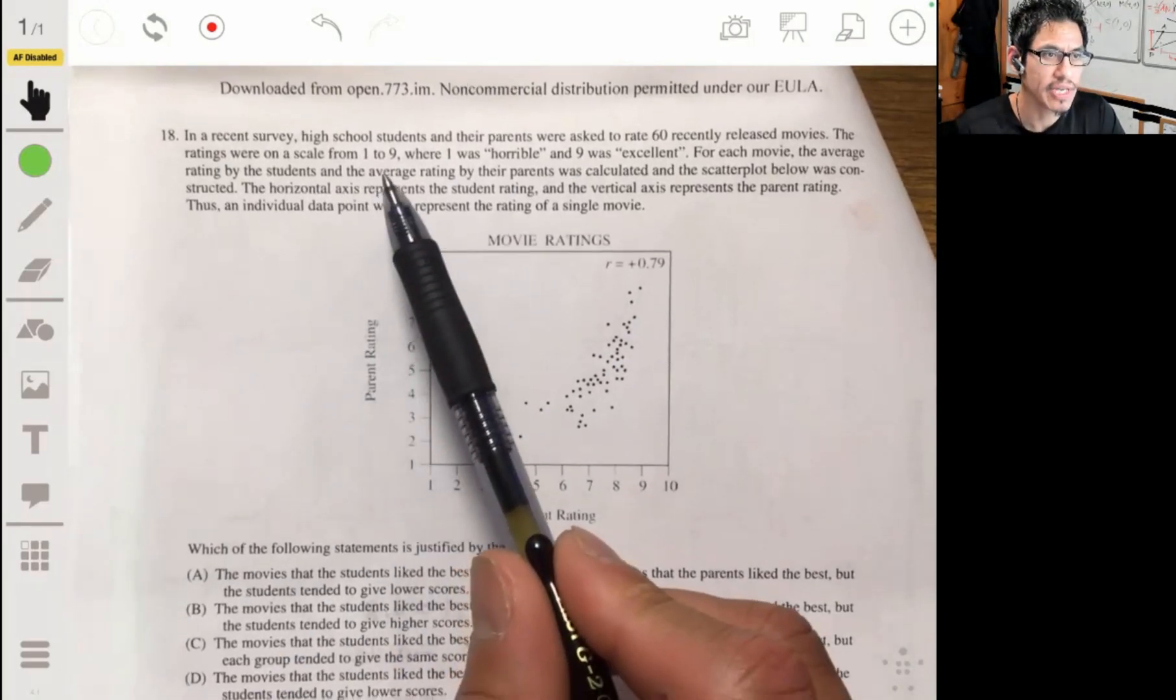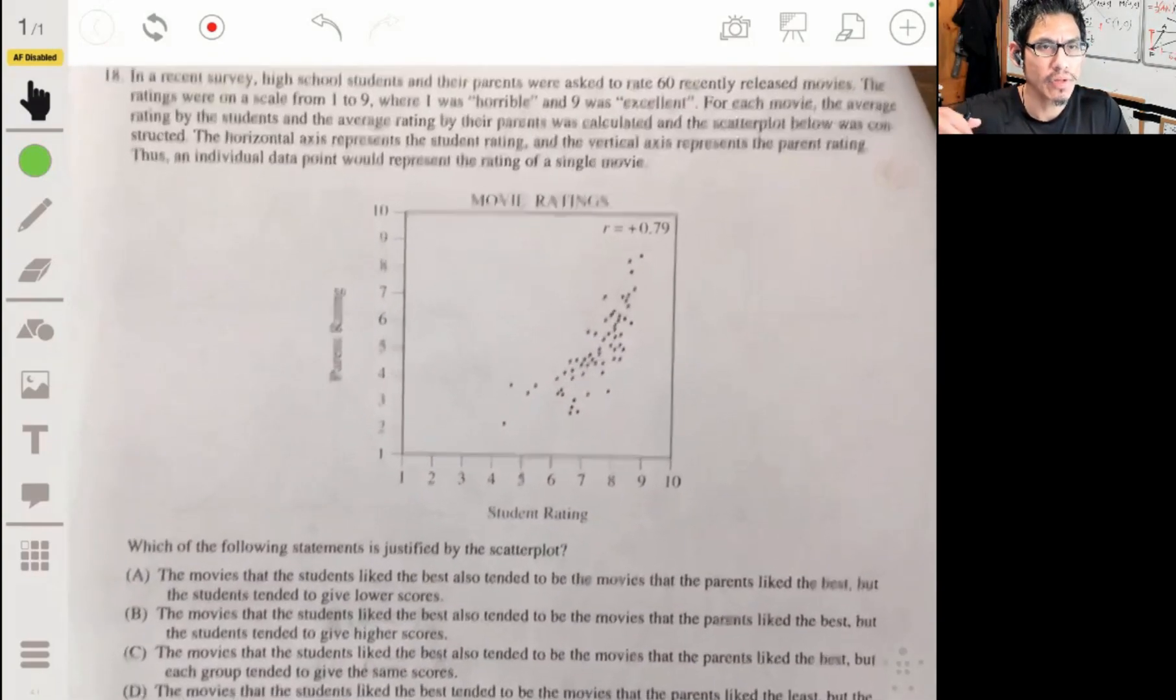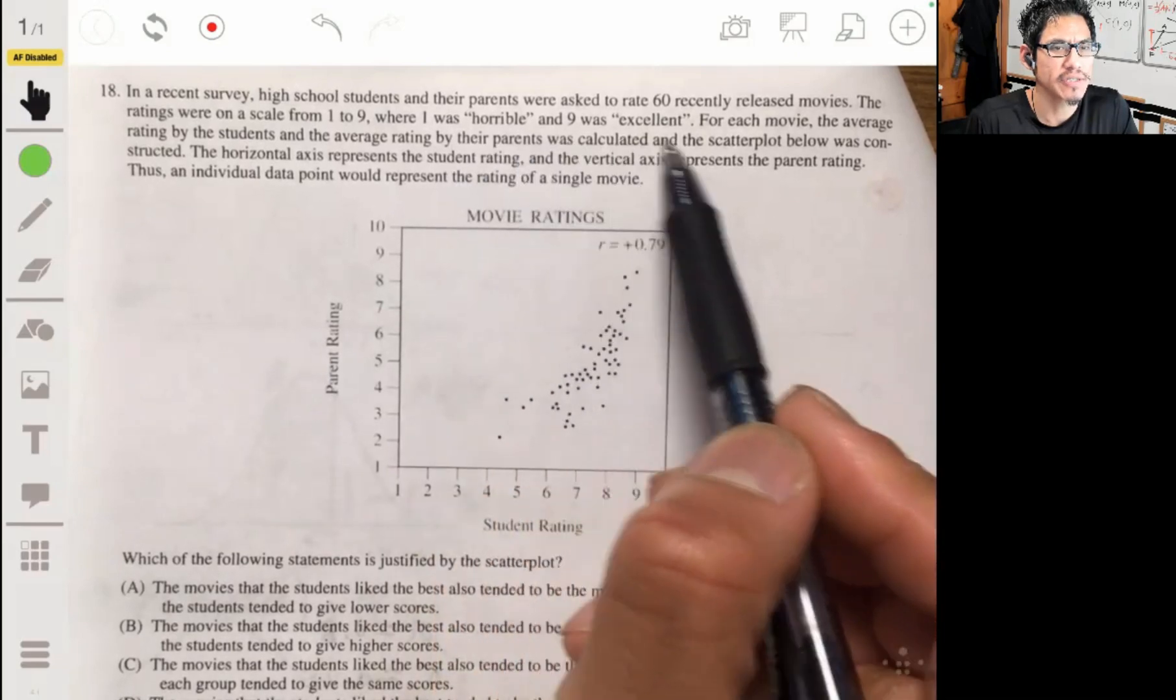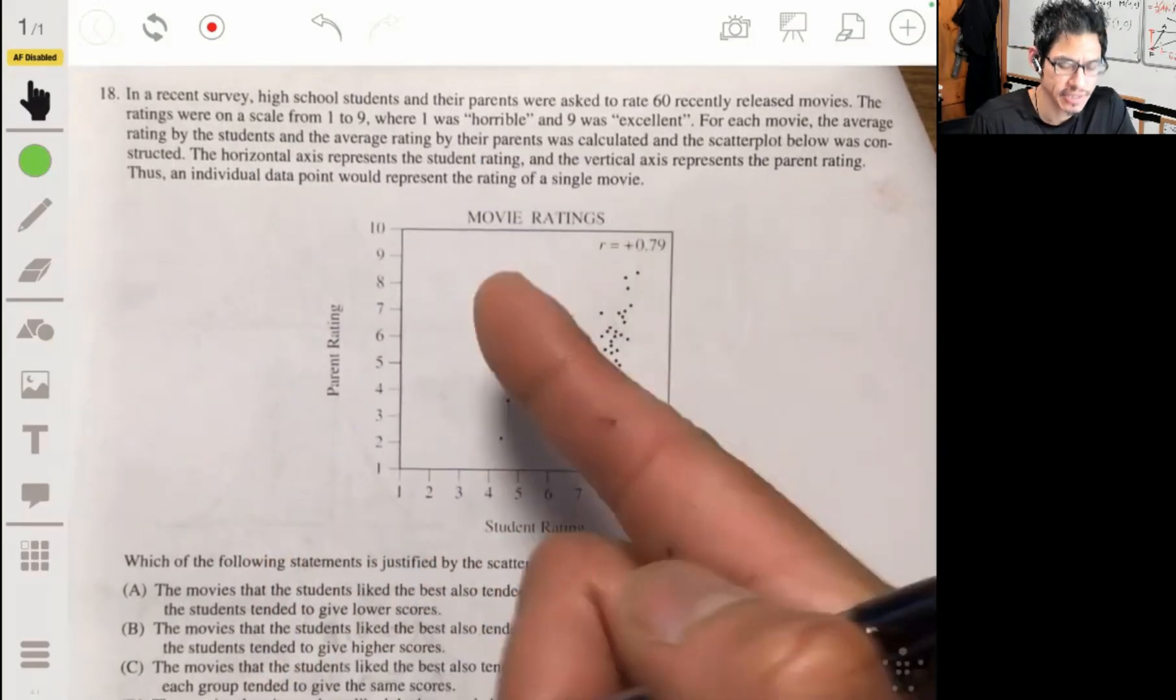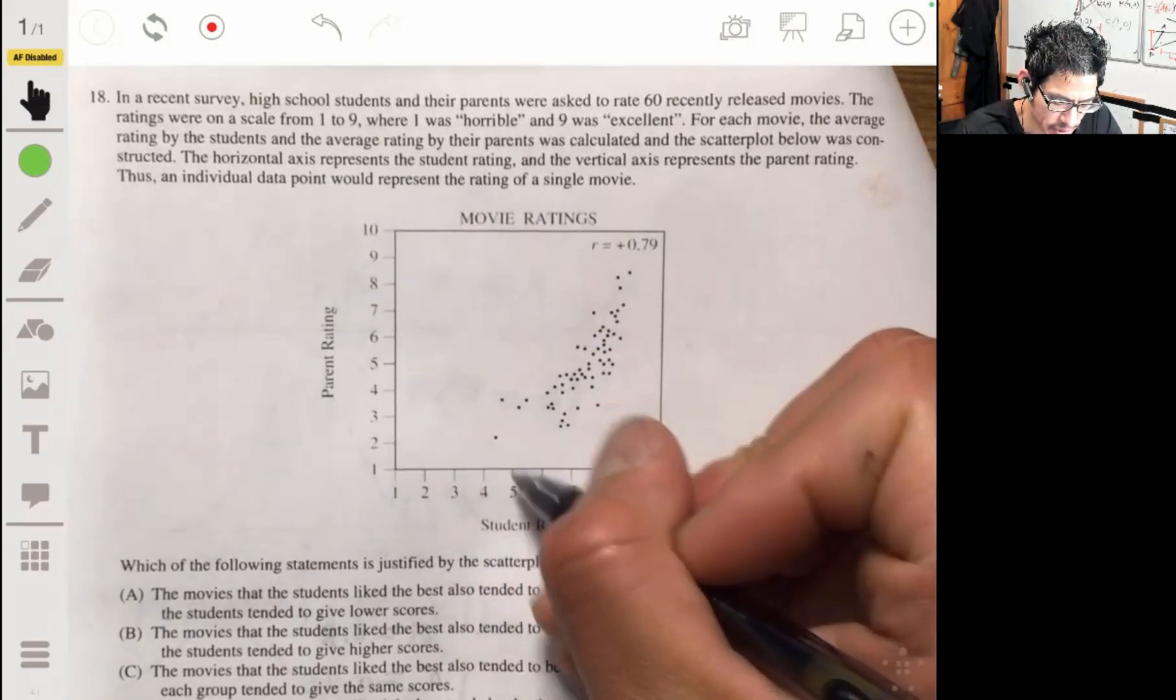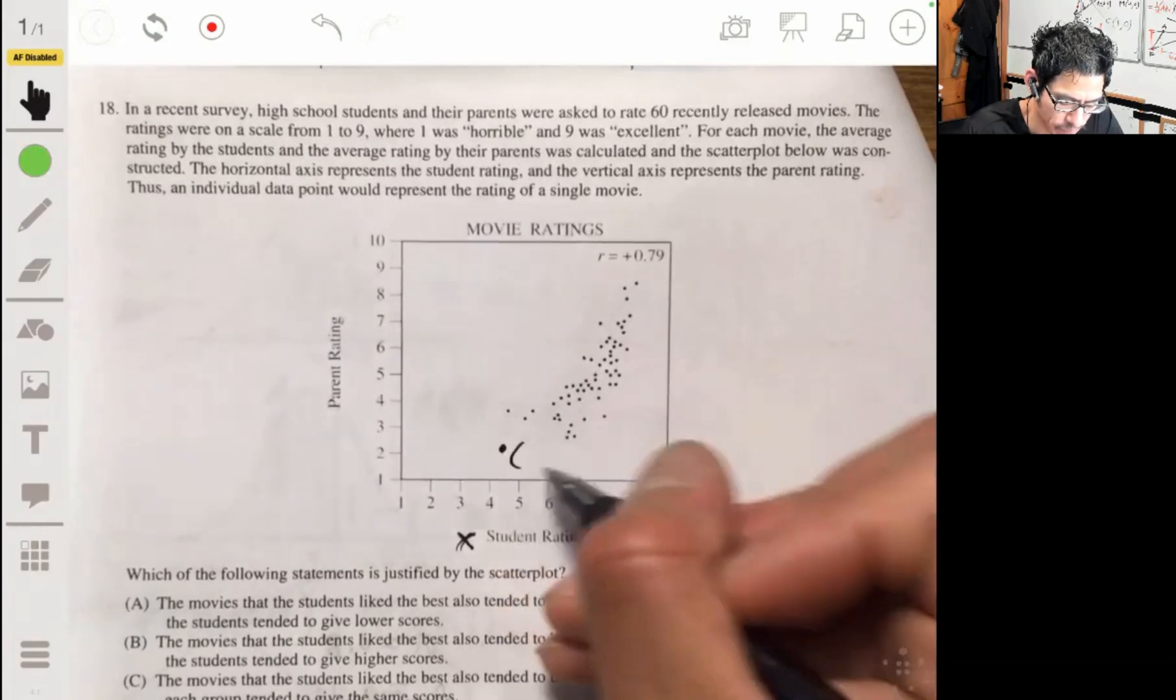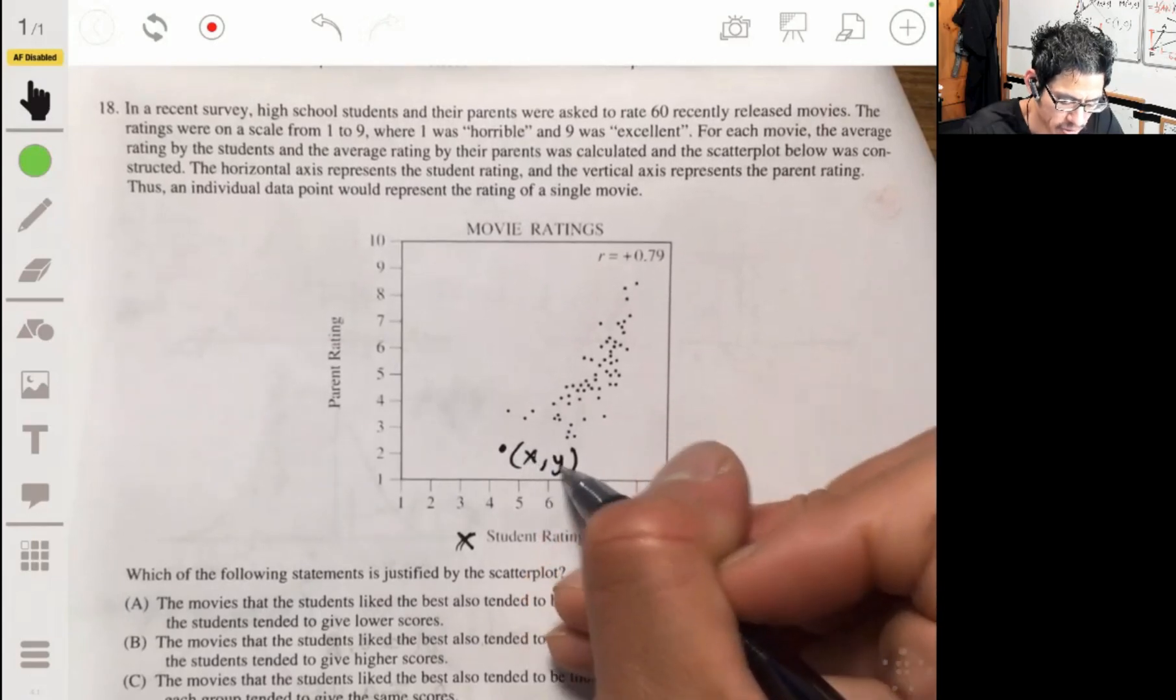18. In a recent survey, high school students and their parents were asked to rate 60 recently released movies. They were rating on a scale from one to nine, one horrible, and nine excellent for each movie. The average rating by the students and the average rating of the parents was calculated, and the scatterplot is given here. So the horizontal values are the student, the vertical are the parents. So like this point would be like X, Y, or students rating, parents rating.